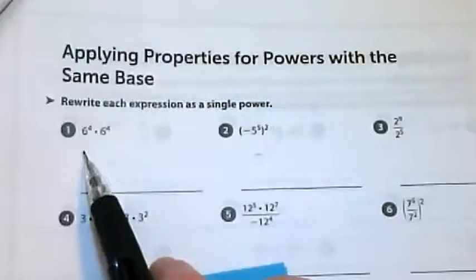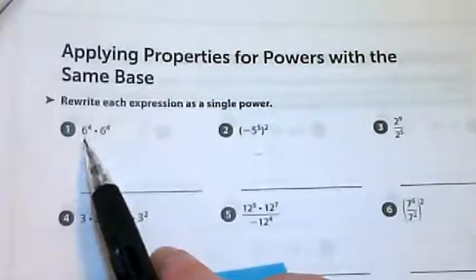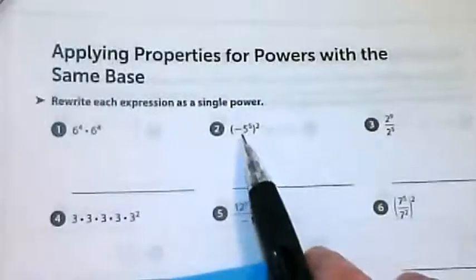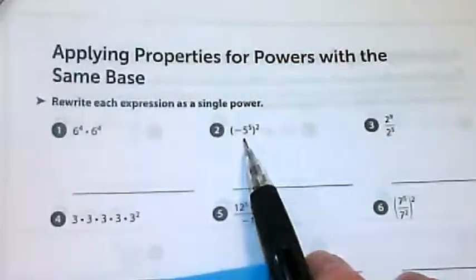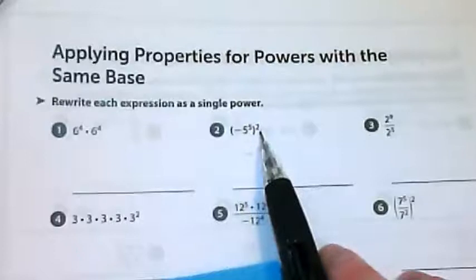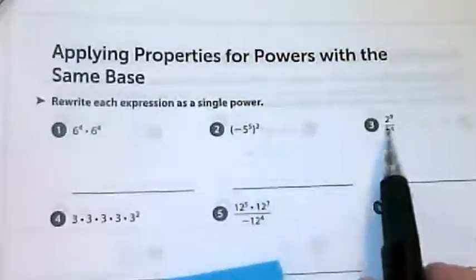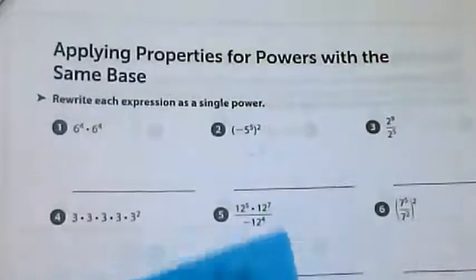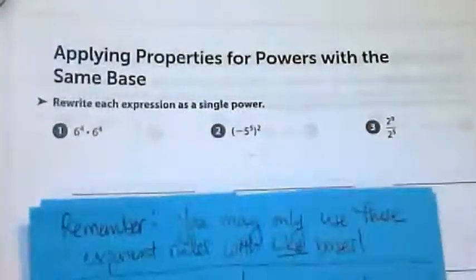These two have the same base and the same exponent. This is 6^4 times 6^4. Here we have negative 5^5 inside parentheses being raised to another power. And here we have a fraction, 2^9 divided by 2^5. So we're going to do these three problems together, and I hope you have these notes.